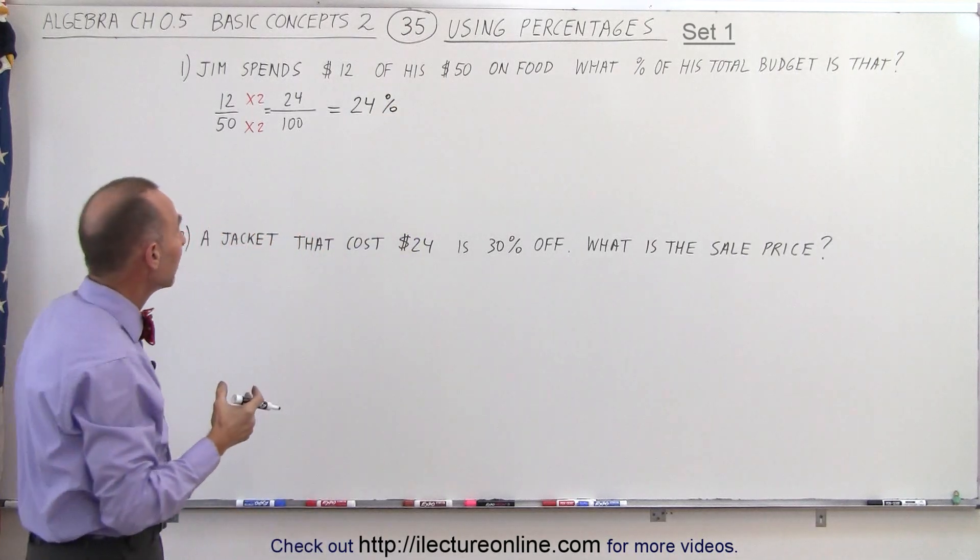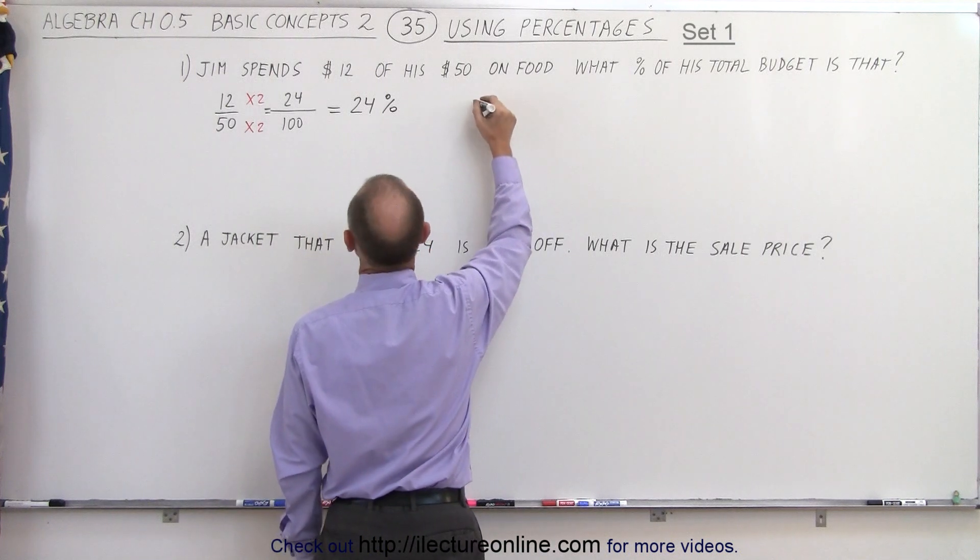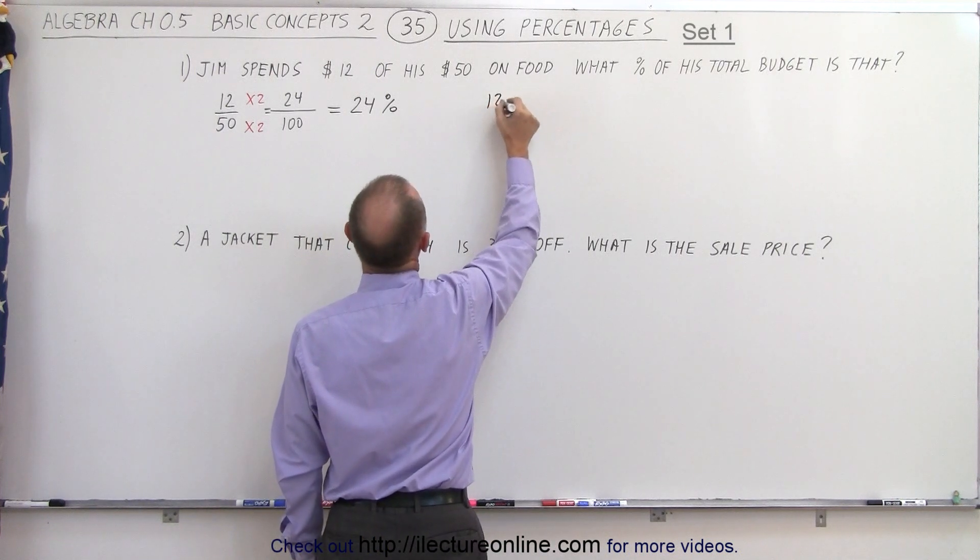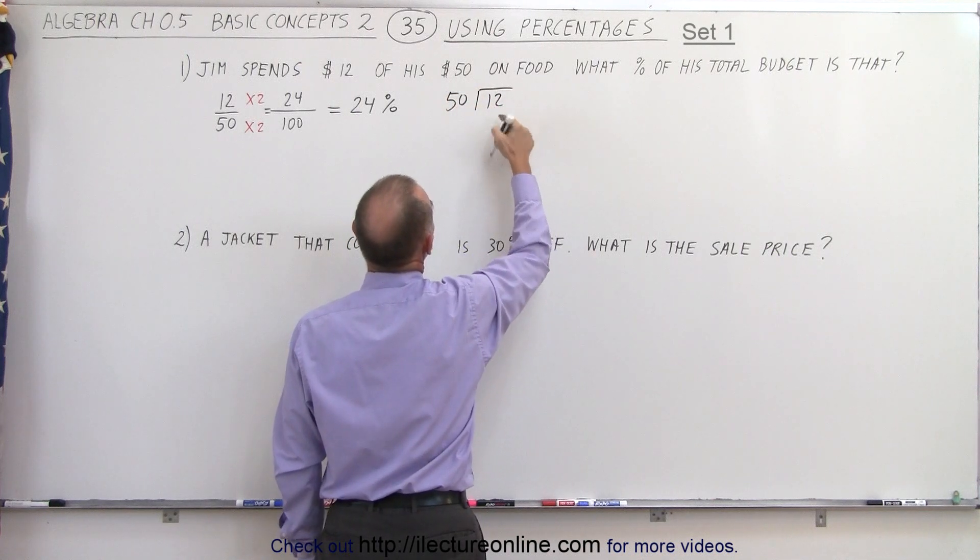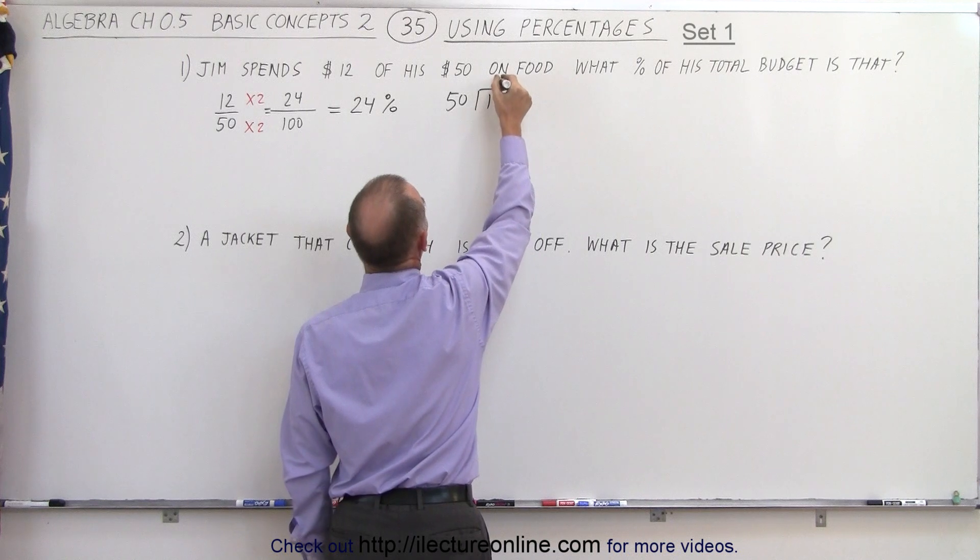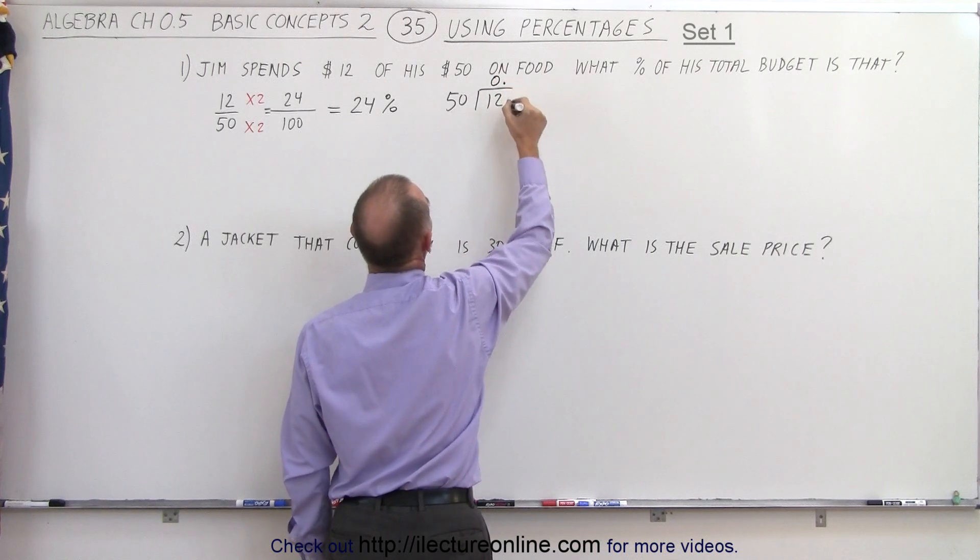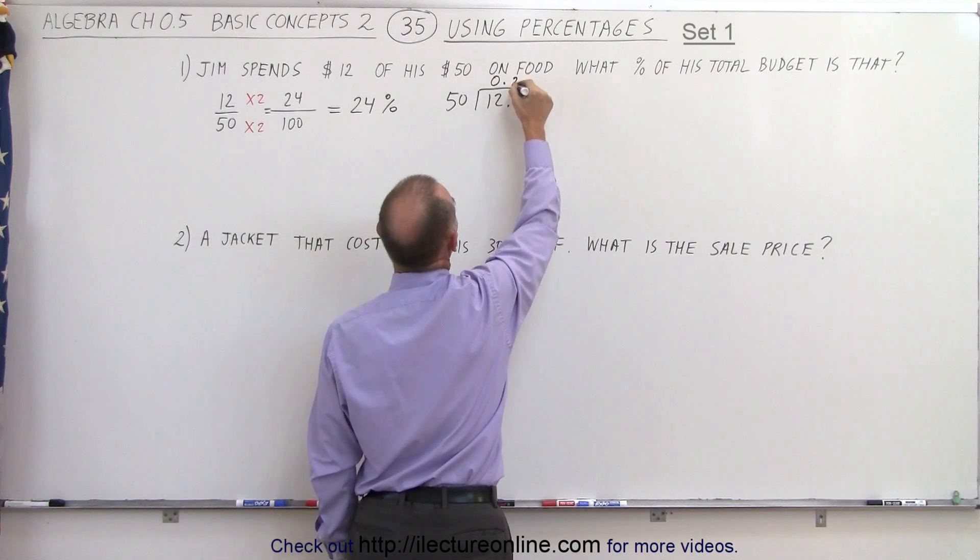We could have also written it as a decimal. That means we can take 12 and divide it by 50. To do that, we say that 50 does not go into 12, so we need to add a zero. So we go zero, point, and point here, add a zero. Now we have 120.